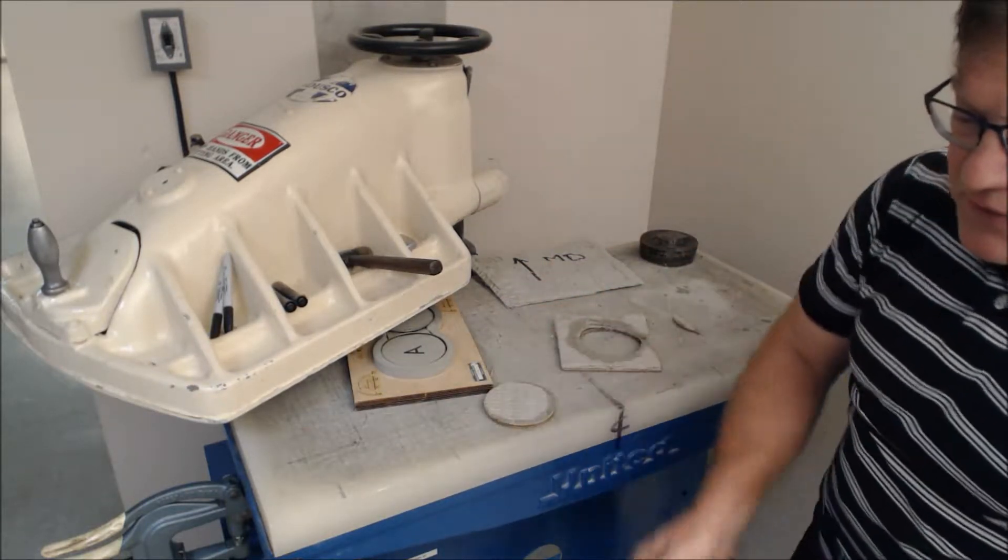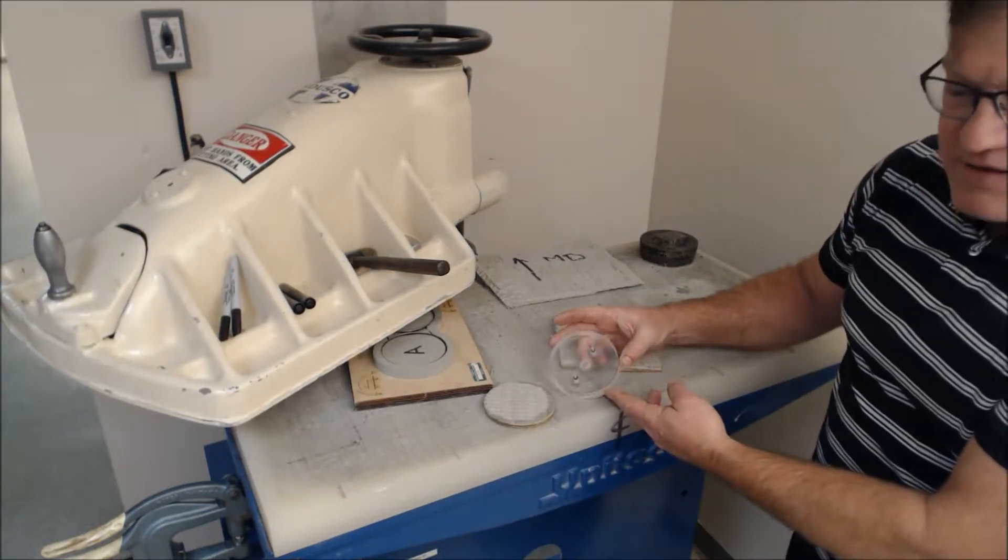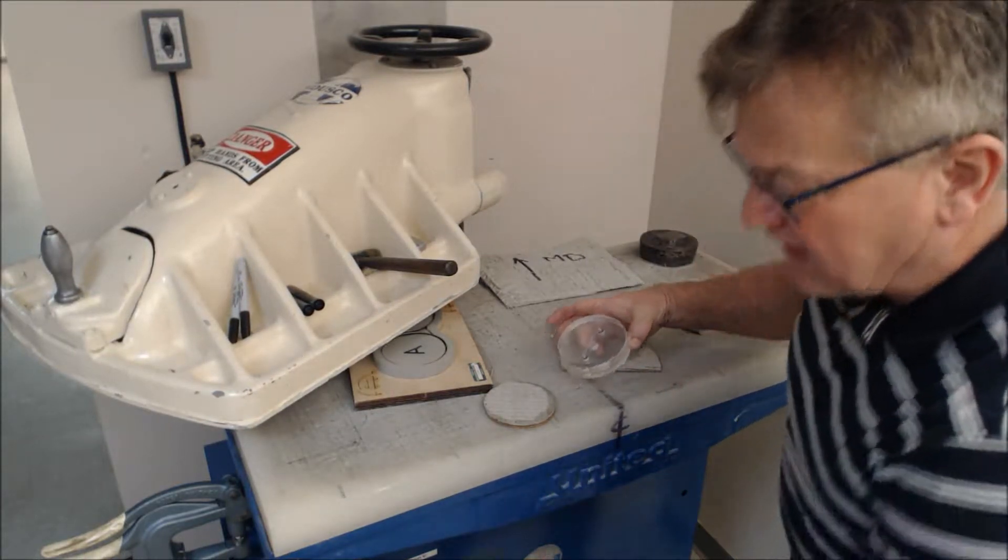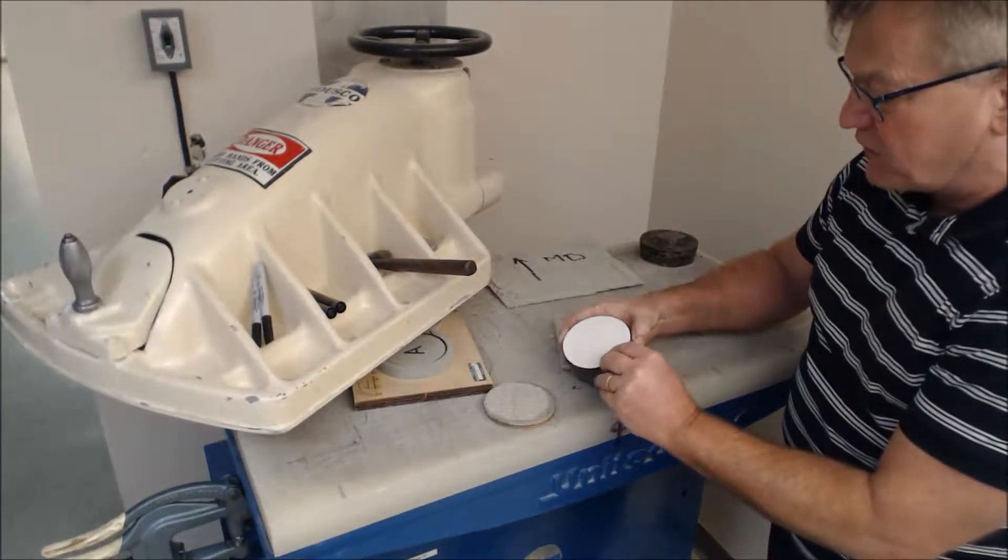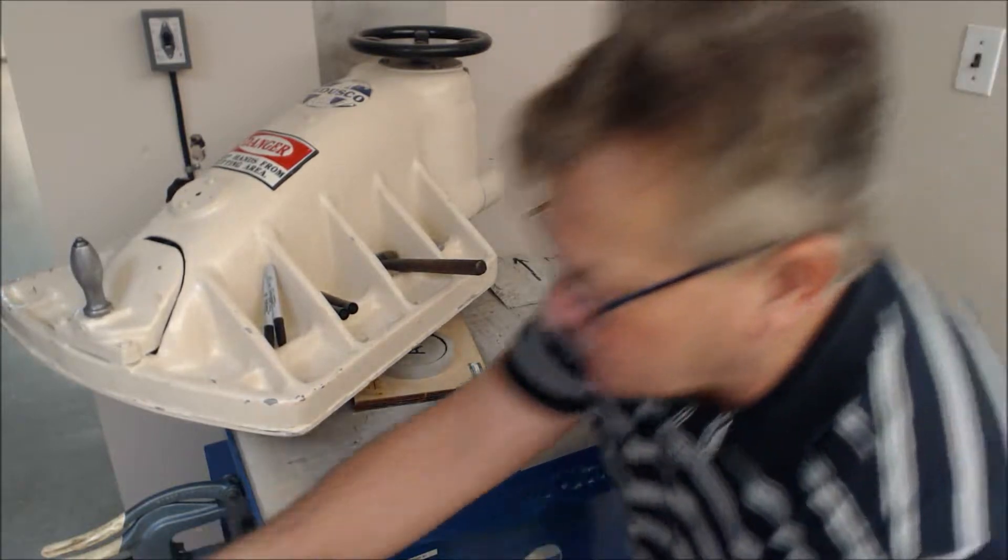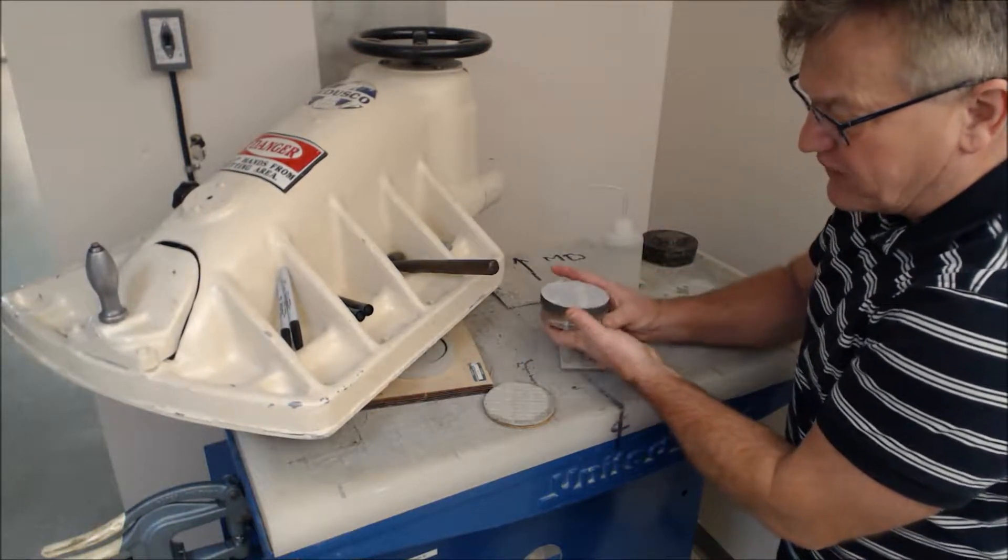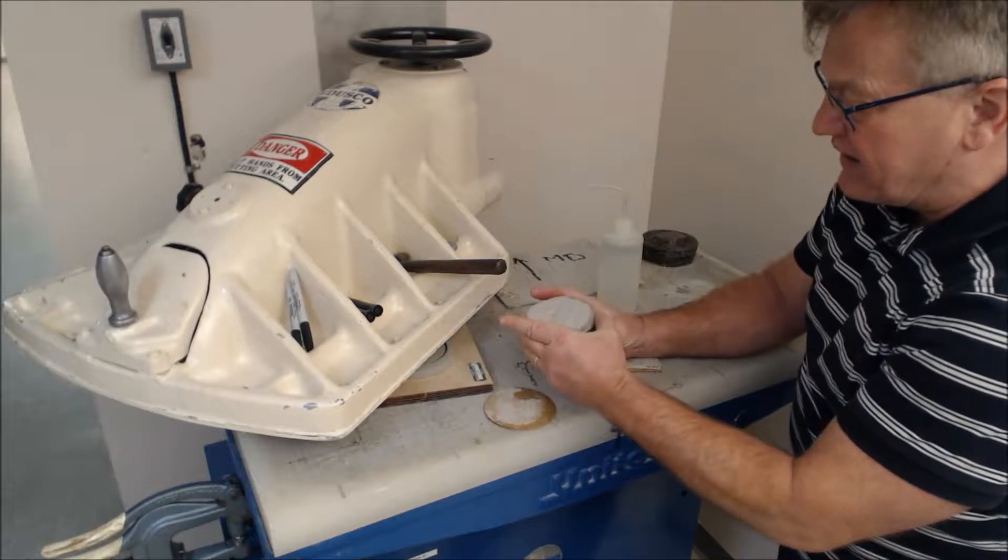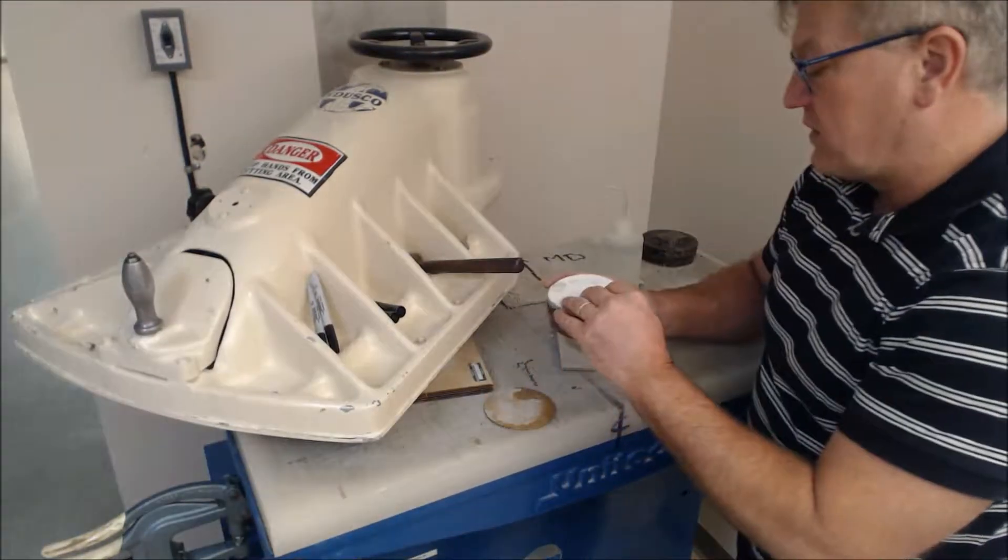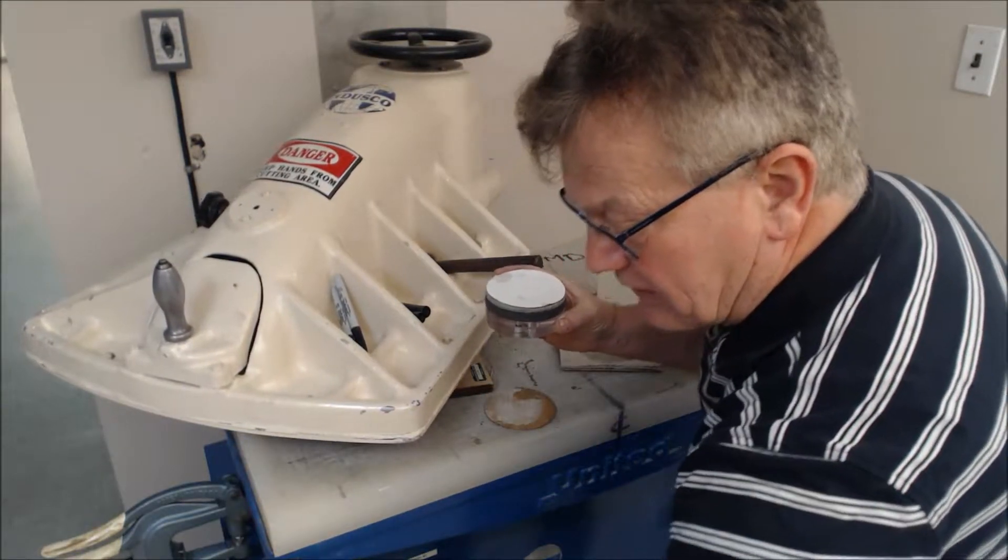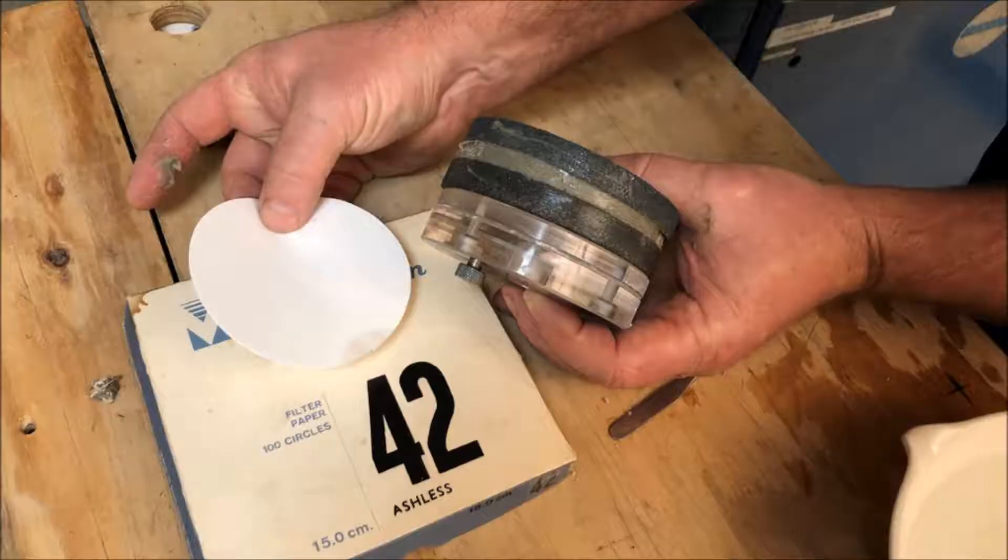Now what you need to do with this sample is make your sandwich. You start with the lower platen for the flux apparatus. You then need a porous stone, and on top of the porous stone has to be filter paper. You then need the GCL specimen and repeat with filter paper and the porous stone.